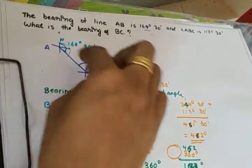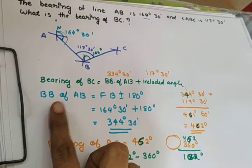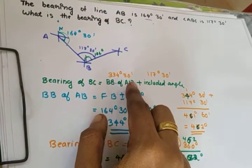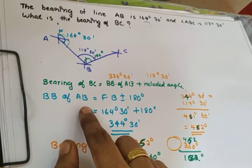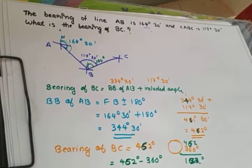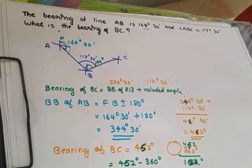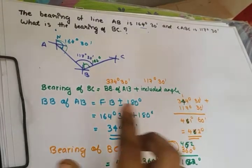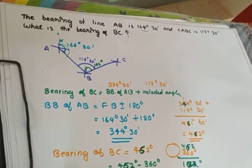It is back bearing plus included angle — this is the equation. Bearing of BC is equal to back bearing of AB plus included angle. Back bearing is fore bearing plus or minus 180 degrees. If the fore bearing is greater than 180 degrees, we subtract 180; if less than 180, we add 180.